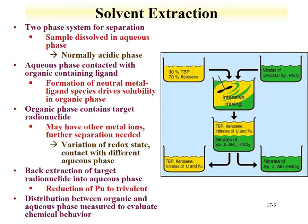What one tends to measure is the distribution of a metal ion between an organic and an aqueous phase. You can measure this by evaluating concentration in an organic phase divided by concentration in the aqueous phase, or by knowing the total amount initially put in and doing a mass balance. The higher the distribution coefficient, the more likely you'll find the metal ion in the organic phase.